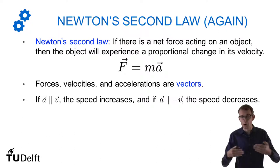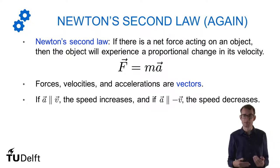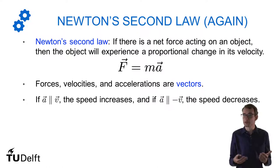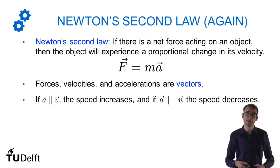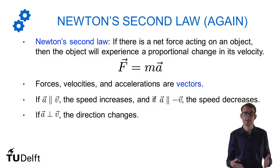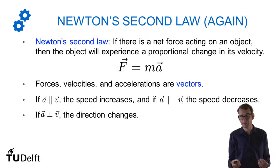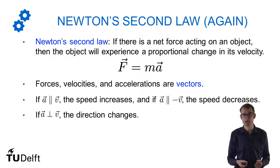If the acceleration points in the opposite direction as the velocity, the magnitude of the velocity is going to decrease. But you can also have an acceleration that makes an angle with the velocity. Today we're going to look specifically at the case where the acceleration is perpendicular to the velocity — then the magnitude of the velocity will stay the same. You'll keep the same speed, but the direction of the velocity is going to change.